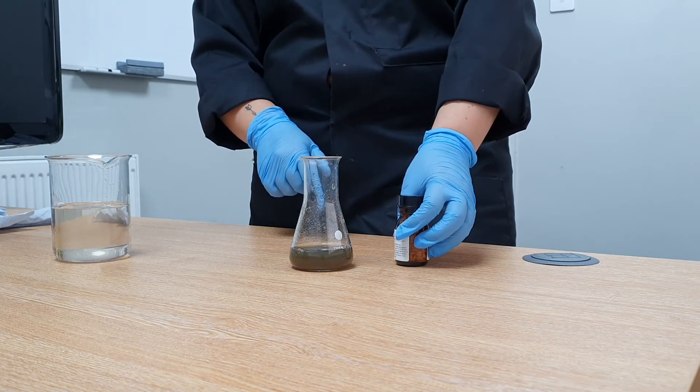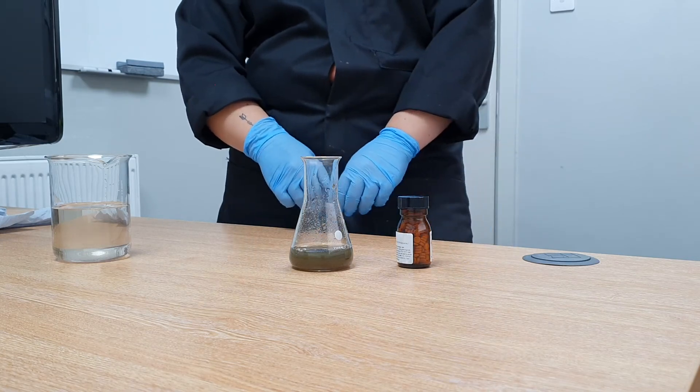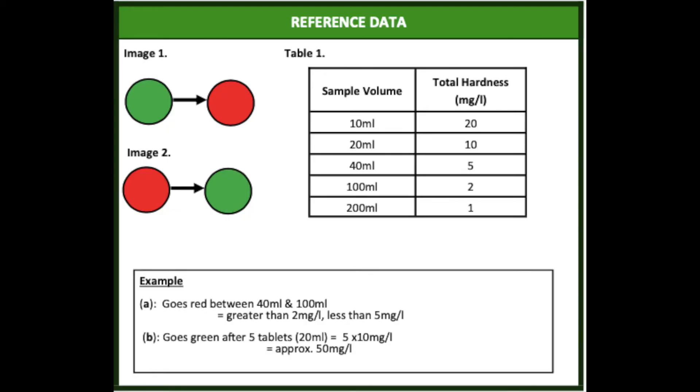Each tablet added corresponds to 10 mg per litre of hardness. For example, if the sample goes red from one tablet between 40ml and 100ml, the total hardness is greater than 2 mg per litre, but less than 5 mg per litre.